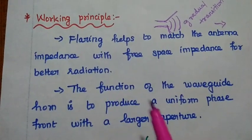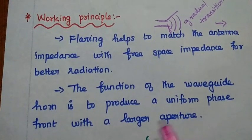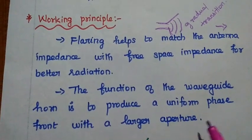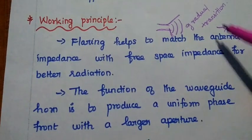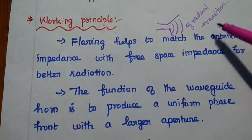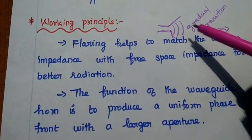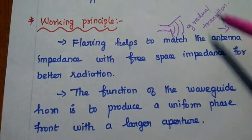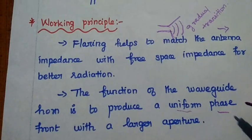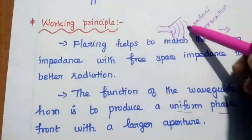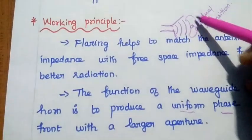The function of the waveguide horn is to produce a uniform phase front with a larger aperture. Because of this gradual transition, we can create a uniform phase front — the signal wave is called the wave front.